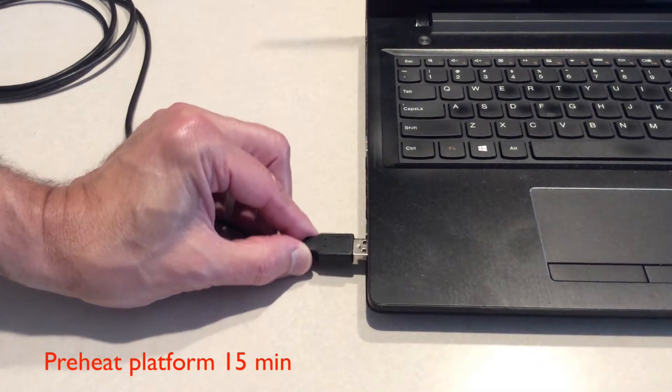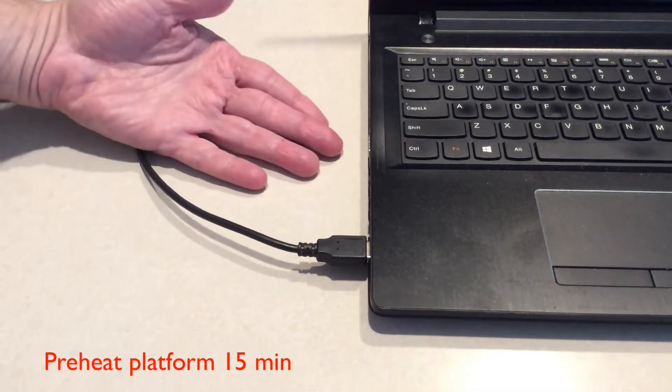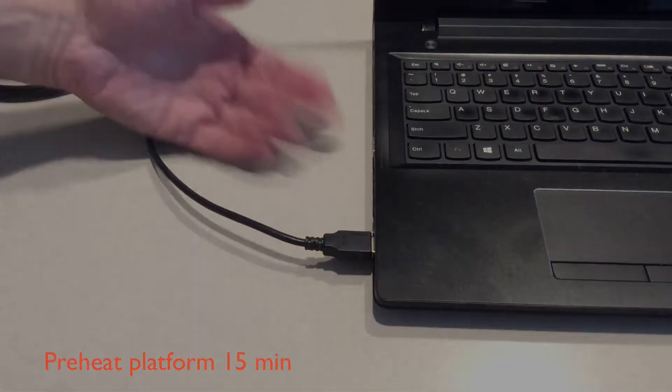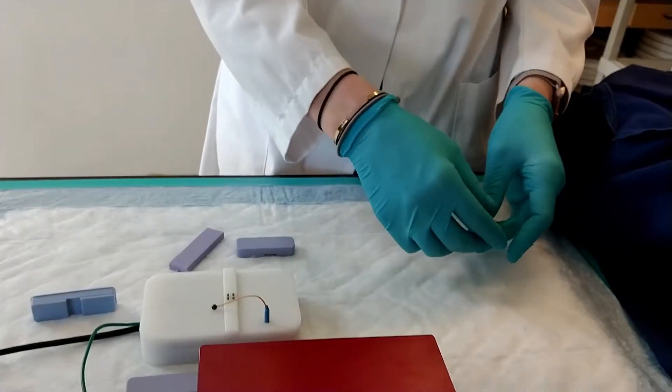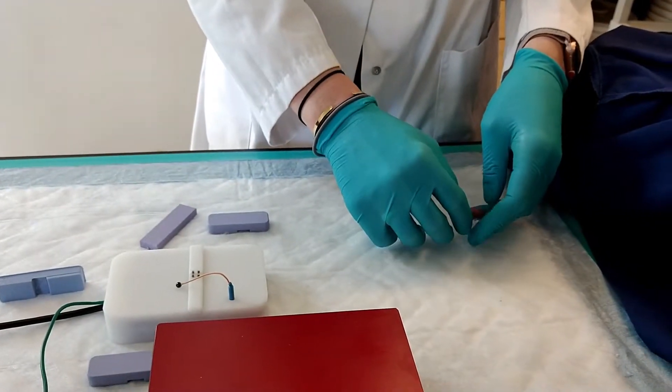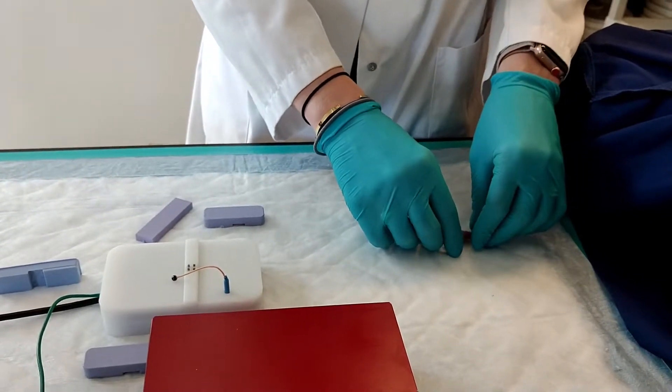The heating element is powered by USB, so plug it in 15 minutes earlier to ensure it's warmed up. With the platform all warmed up and the mouse ready to go, it's time to prepare the electrodes.